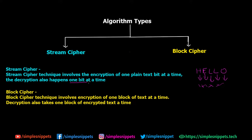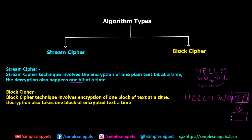Conversely, block cipher — as the name suggests — involves encryption of one block of text at a time. So let's say the text is 'hello world': in block cipher, a complete block of words will be encrypted to a new complete block. Then the next block of words is taken, then the next, and so on. Decryption also takes place the same way — the entire block is decrypted back to the original plain text from the cipher text.